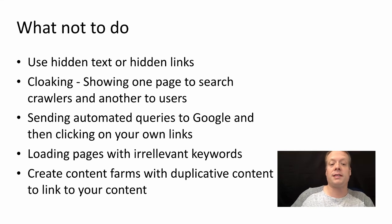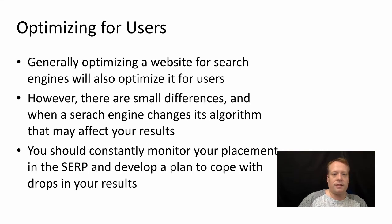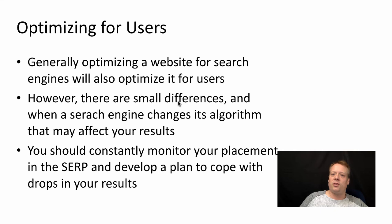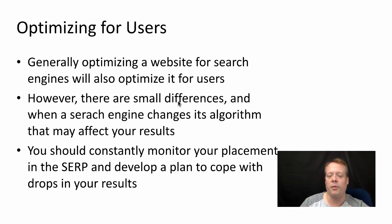You shouldn't load pages with irrelevant keywords or create content farms with duplicate content that link back to your account — many firms got away with this for a while, but Google and others have cracked down. You need to make sure your website is optimized for actual users, not just search engines. When a search engine changes its algorithm, it may affect your results, so you should constantly monitor your placement and develop a plan to cope with ranking drops. Dropping to the second page means a vanishingly small number of people will find your link.